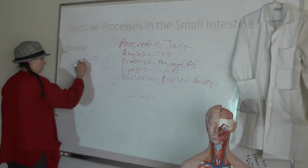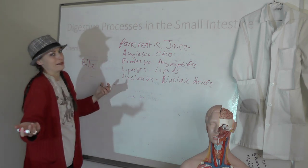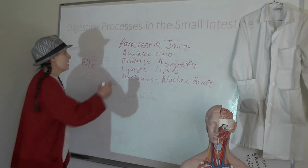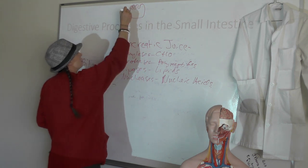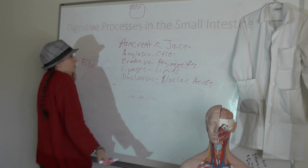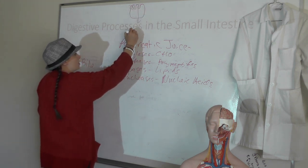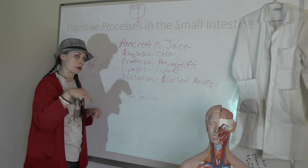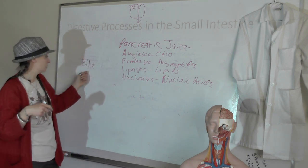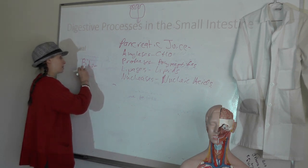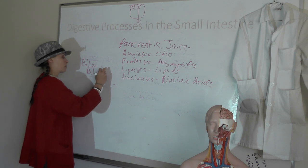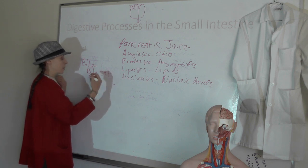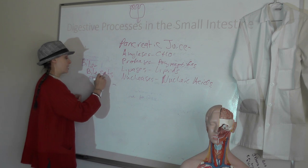Bile — the most interesting thing about bile is that it's where we concentrate waste the liver pulls out of all the blood absorbed by the small intestine. Everything absorbed goes into the body, and that somewhat 'dirty' blood goes to the liver and gets filtered, with wastes concentrated in bile. What's important for digestion is that bile contains bile salts, which are important for lipid digestion — specifically for emulsification. So bile salts emulsify fats.